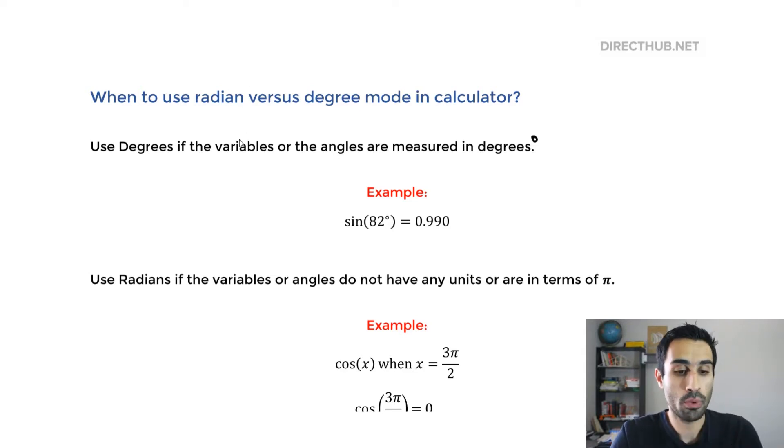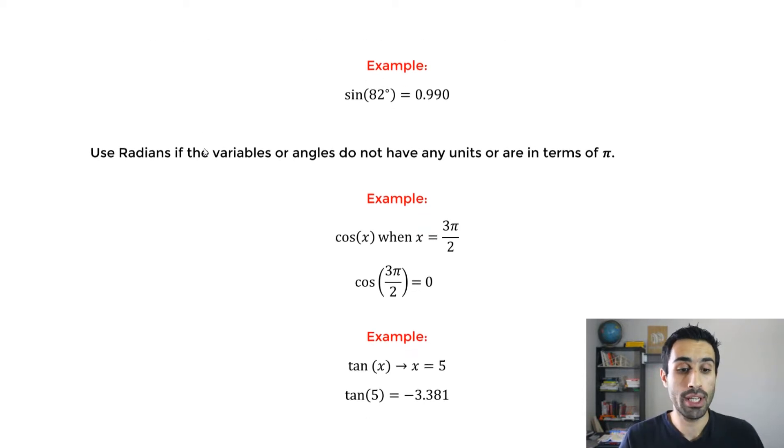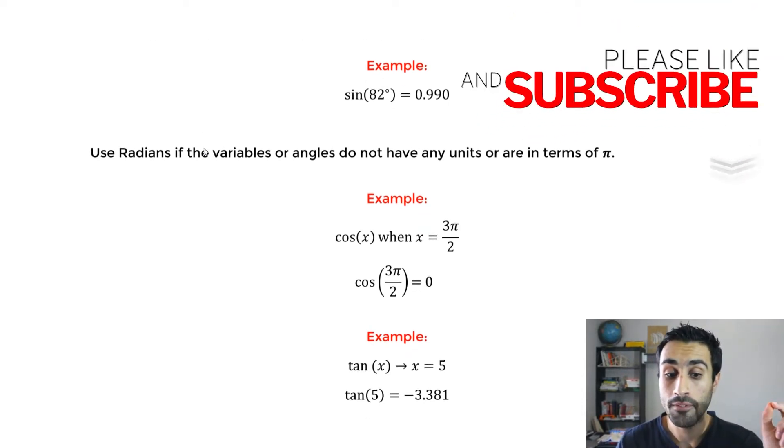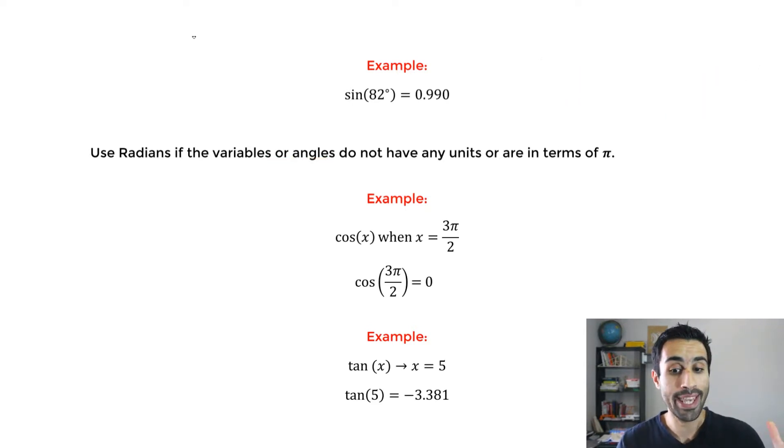Now let's move on to the radian mode. When do we use the radian mode? Use radians if the variables or the angles do not have any units or are in terms of pi. So there's two things. They do not have any units, or you may be given the variable for x or things in terms of pi, 2π, 3π, whatever, everything in terms of pi.